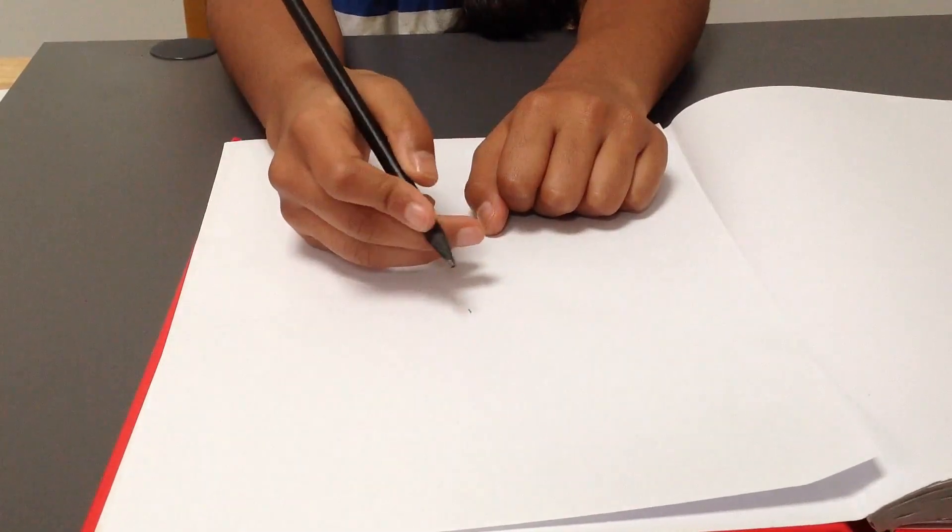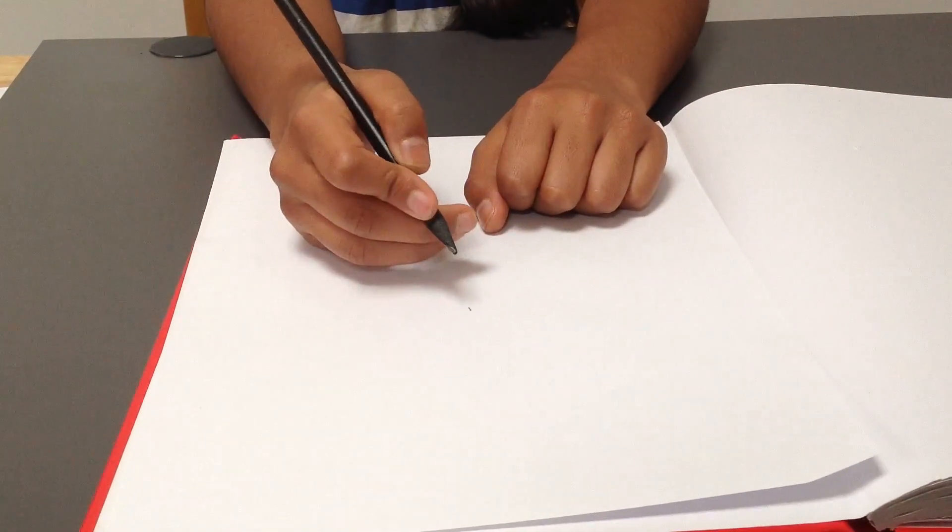The barrel of the pencil sort of lays back on the hand, about where your knuckle is.